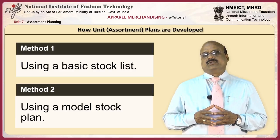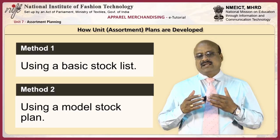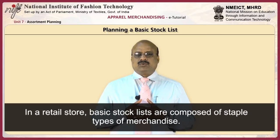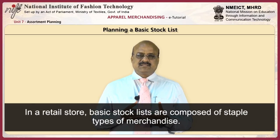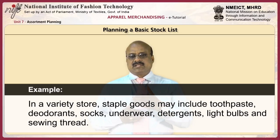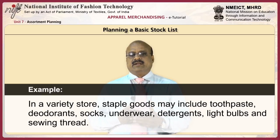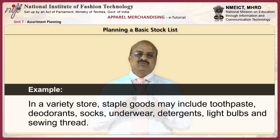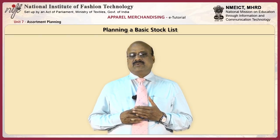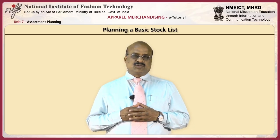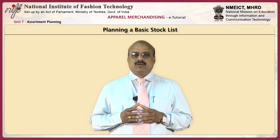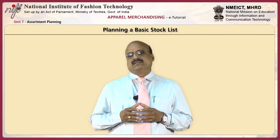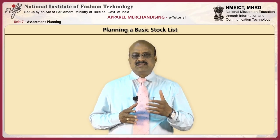All merchandise assortments can be planned using either of these two methods; however, the method used depends on the kind of merchandise under consideration. In a retail store, basic stock lists are composed of staple types of merchandise. For example, in a variety store, staple goods may include toothpaste, deodorants, socks, underwear, detergents, light bulbs, and sewing threads. The list will specify in detail the items to be carried in stock. When planning staple merchandise assortments, buying specialists should consider homogenous and heterogeneous staples as well as seasonal and non-seasonal staples.